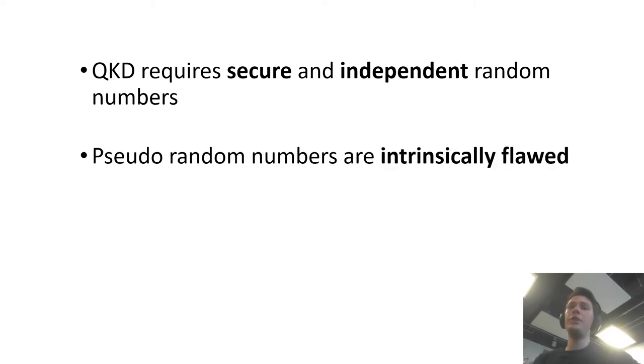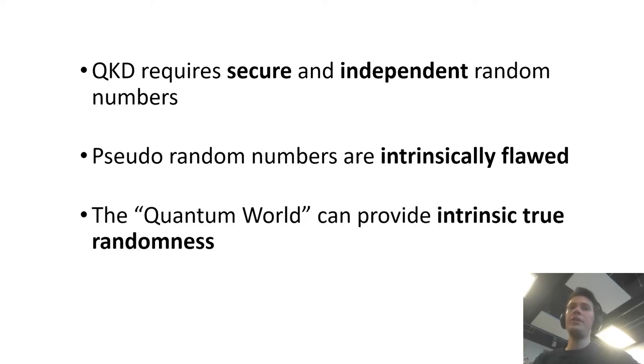In particular, you can't use pseudorandom numbers that are generated algorithmically because they are intrinsically flawed so this would compromise the security of your protocol. This has led researchers to try and harness the randomness from quantum system because it can be provably secure and is intrinsic.